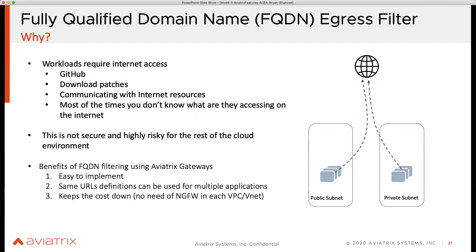It could be connectivity to a SaaS provider, for example Office 365, OneDrive, or something else. There is a need to go out there — to pull some code, for example, to pull things from GitHub or to pull some patch from an external website. So we know there is a need to go out and pull things or establish connectivity to the internet.